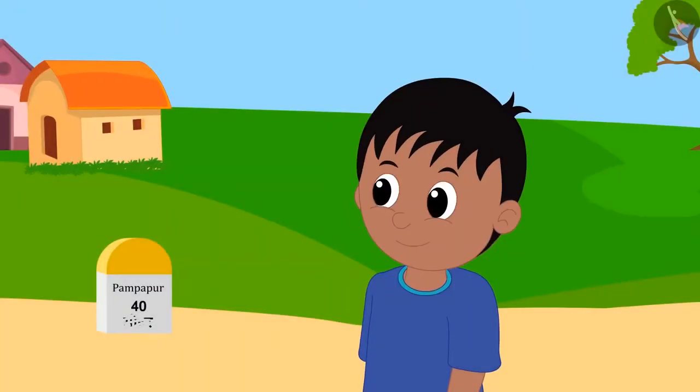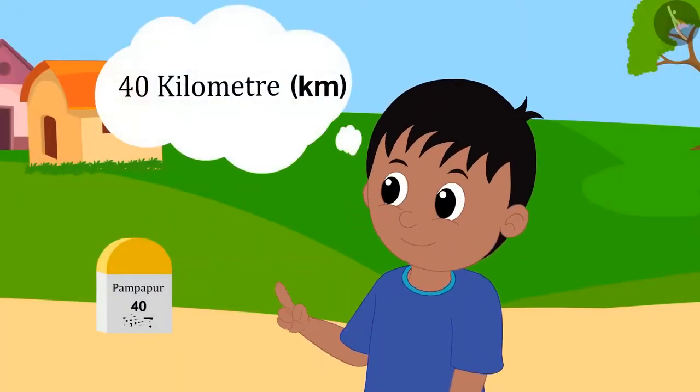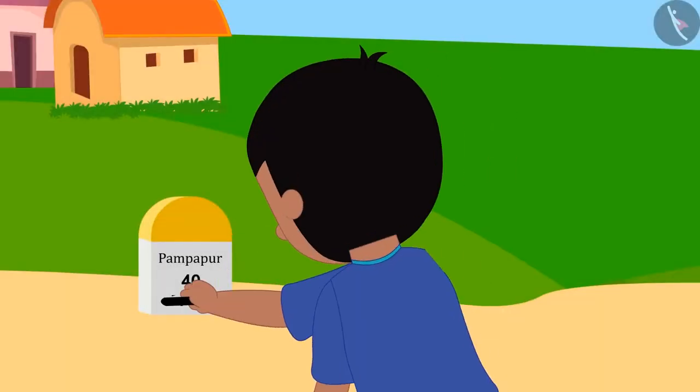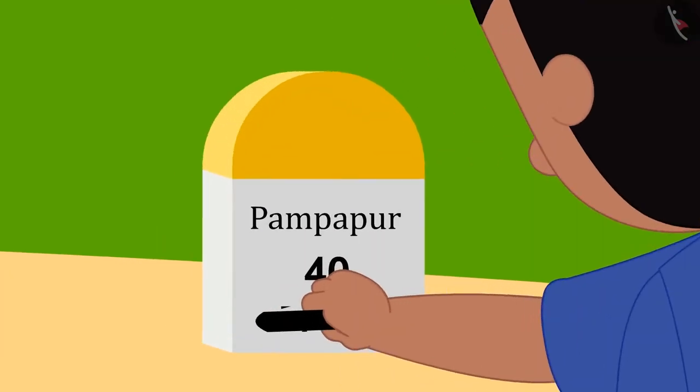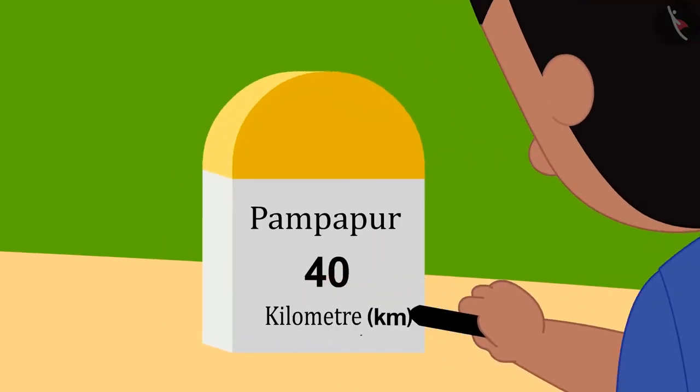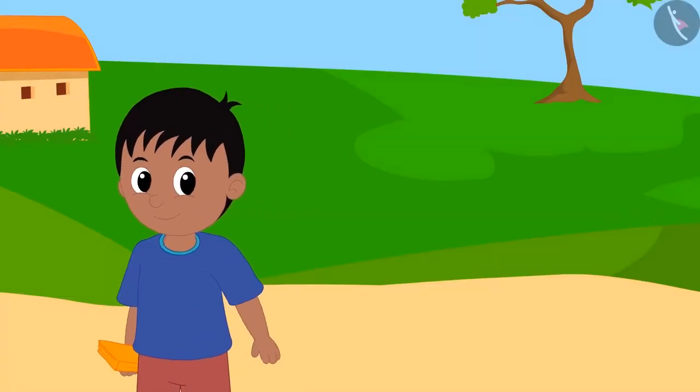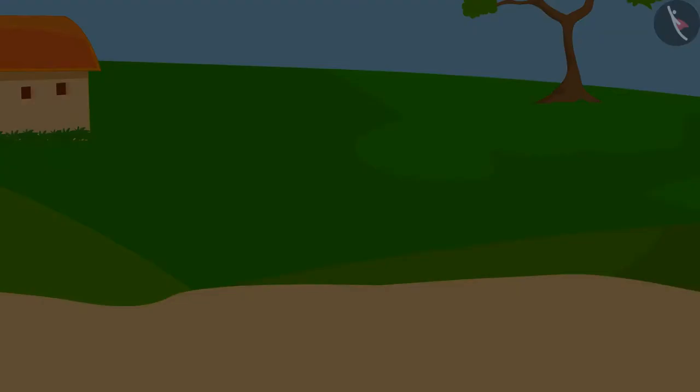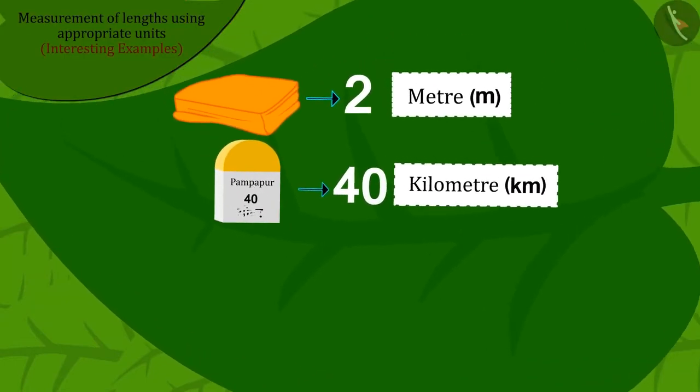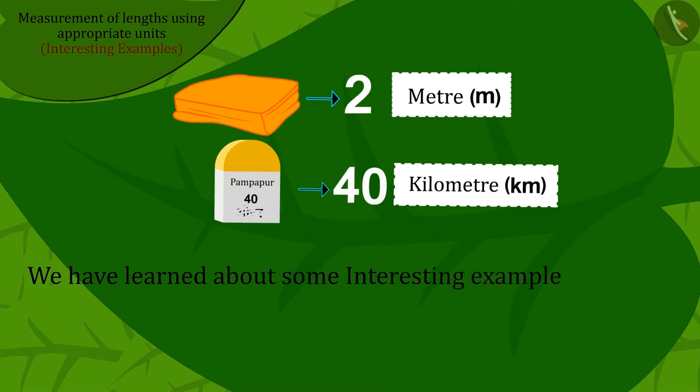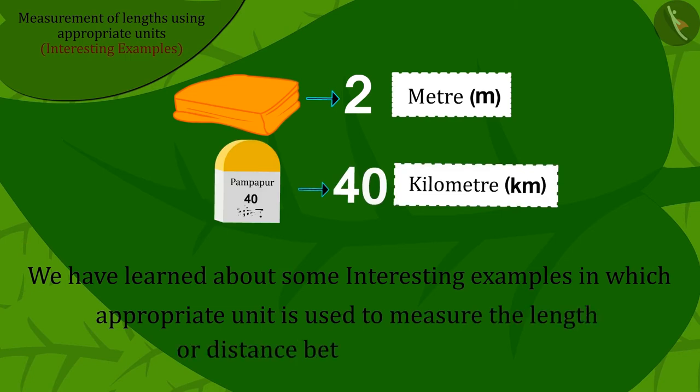Raju found the right answer with your help. Then, he took a piece of coal and wrote 40 kilometers in this way and returned to his home. Kids, in this video, we have learned about some interesting examples in which appropriate unit is used to measure the length or distance between objects.